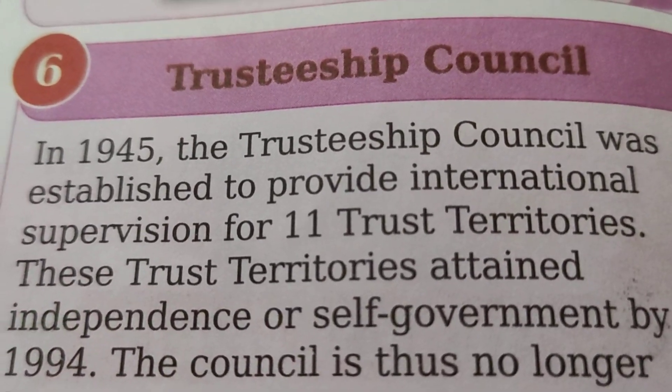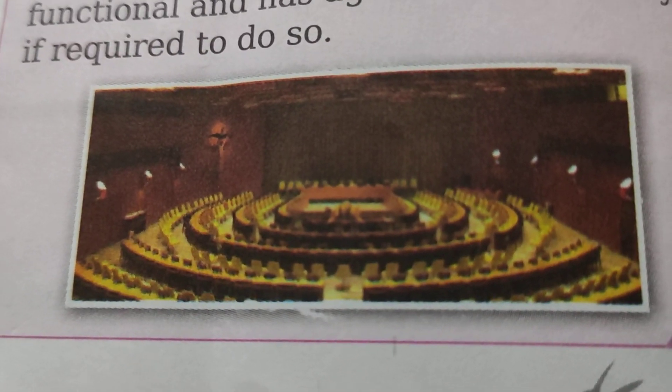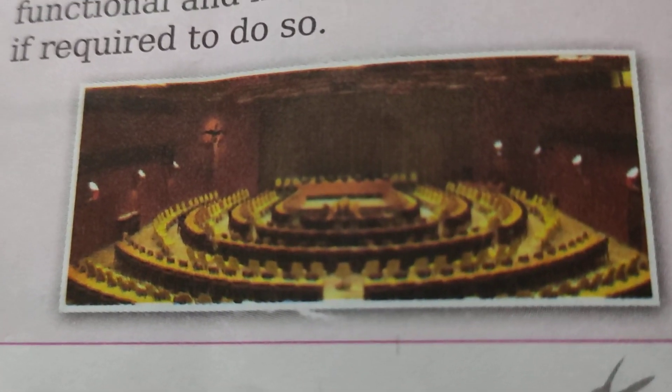The last organ is the Trusteeship Council. It supervises the welfare of dependent people under the UN and helps them to attain self-government. All countries have now become independent and have joined the UN. The last one was Palau, which became independent in 1994. The Trusteeship Council is no longer functional now. All 11 trust territories achieved self-government by 1994, so the council's work is complete.